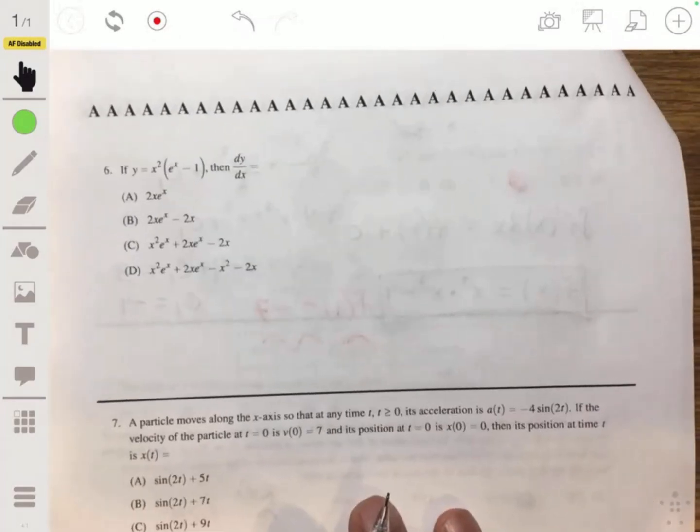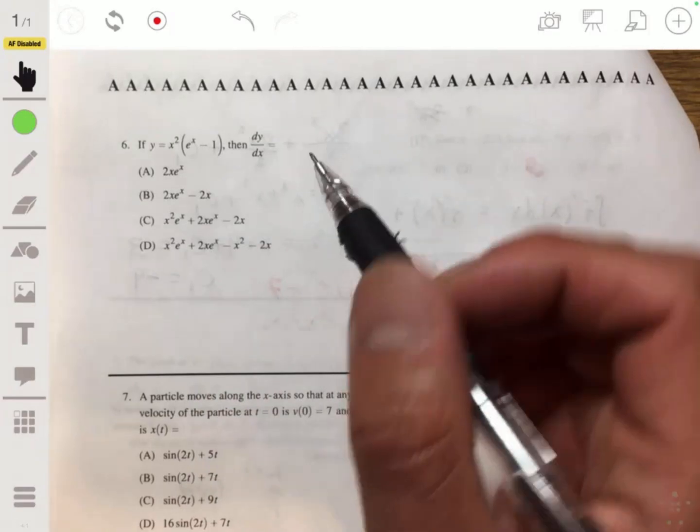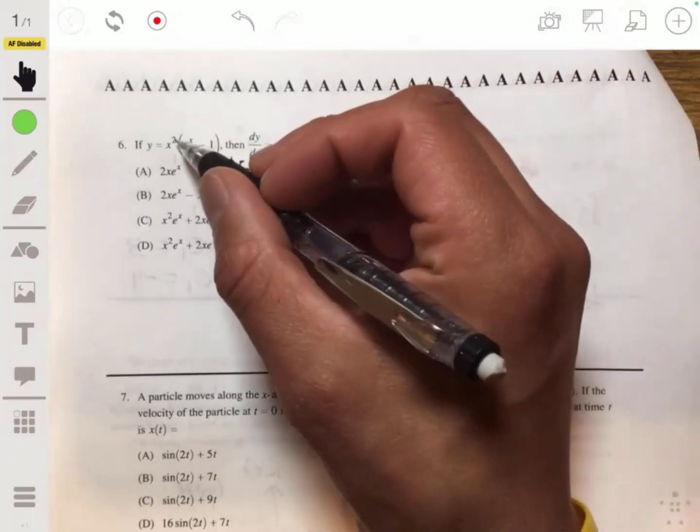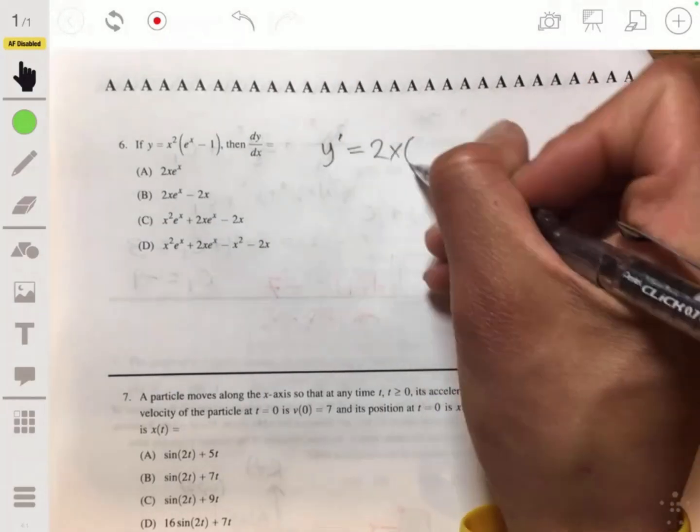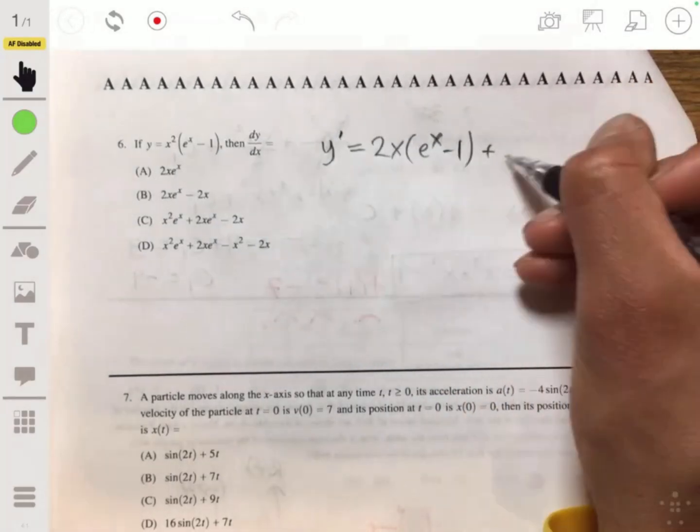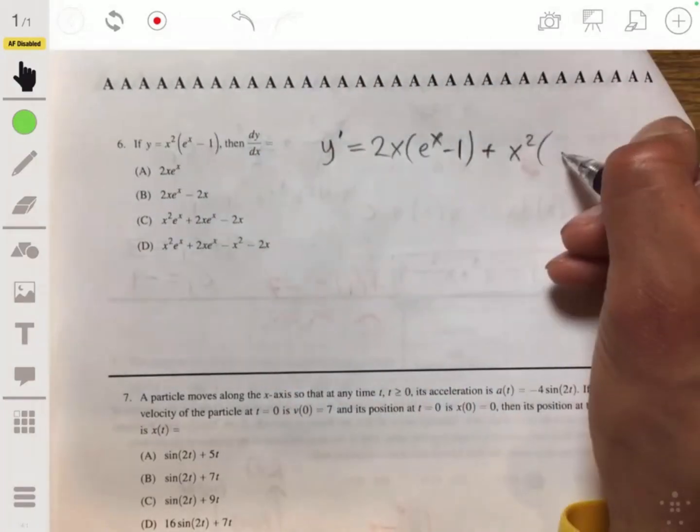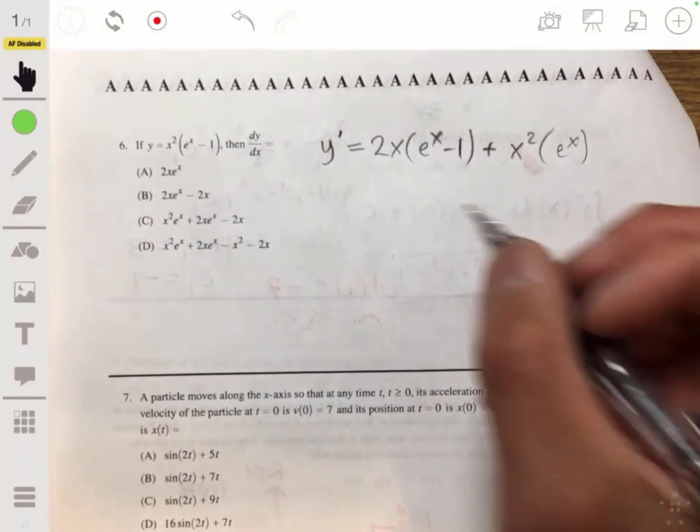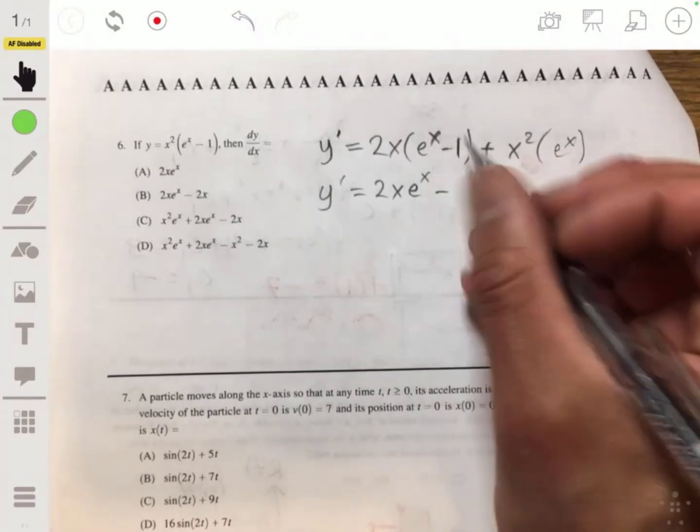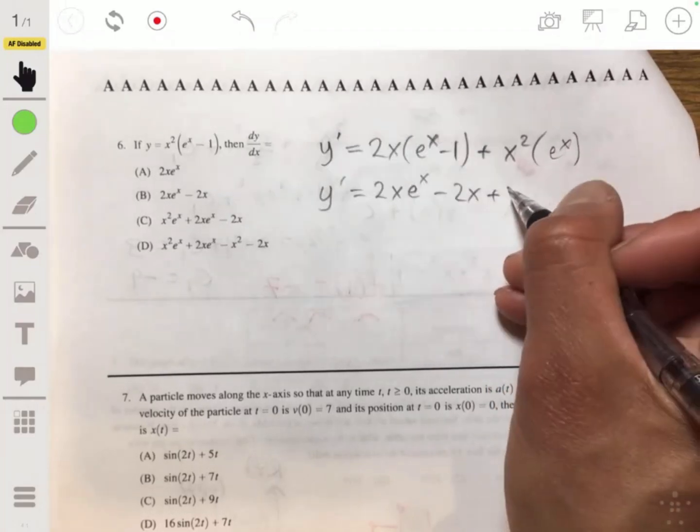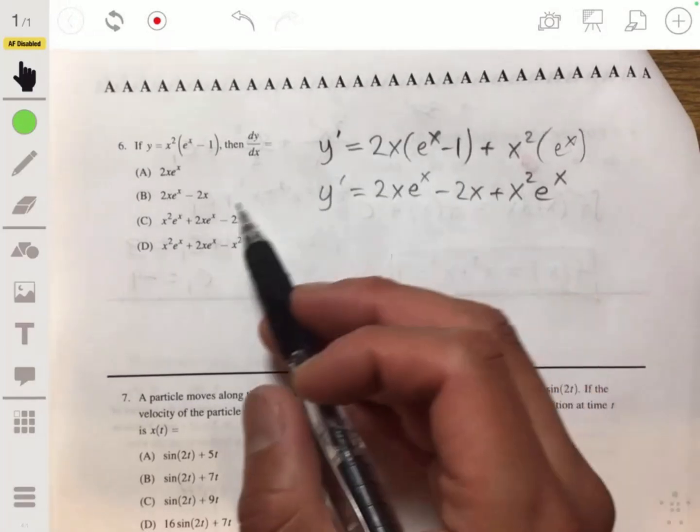Problem 6. If we have that y = x^2 * e^(x-1), then dy/dx is... so we're just finding the derivative, so we can just use product rule. So y' will be the derivative of x^2, which is 2x, times e^(x-1), plus x^2 times the derivative of e^(x-1), which is just e^x. So here we were just gonna simplify. So 2xe^(x) - 2x + x^2*e^x. And so the answer is just C.